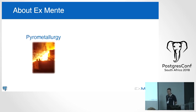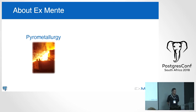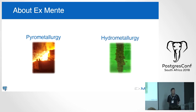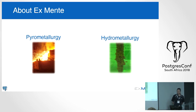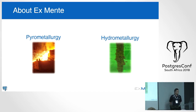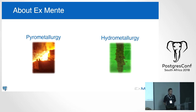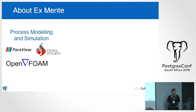The company does pyrometallurgy — high temperature metallurgy, so 1700 degrees Celsius is just about right. Hydrometallurgy is getting metals out of ores with water-based systems, acids and those types of things. Extractive metallurgy is basically getting valuable metals out of ores, which is a big thing in South Africa because we've got a lot of resources and need to take care of our industry.